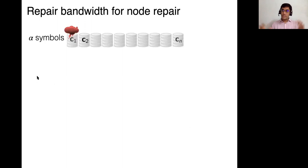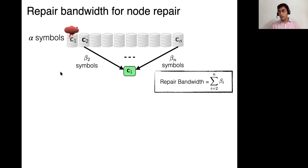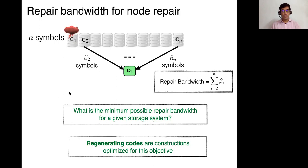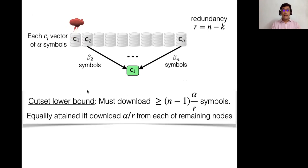So just a little bit more formally, you have these nodes, each of which stores alpha symbols, and one of them goes down. And to recover that node, you download, let's say beta_i symbols from the ith node. And if you're able to recover C1 by doing so, then the repair bandwidth, which is your total download, is simply the summation of all the beta_i's. That's the total number of bits you download. And really the question then becomes, what is the minimum possible repair bandwidth you might have for a given storage system? And the regenerating codes are exactly constructions which are optimized for this objective. Regenerating codes are optimized for repair bandwidth.